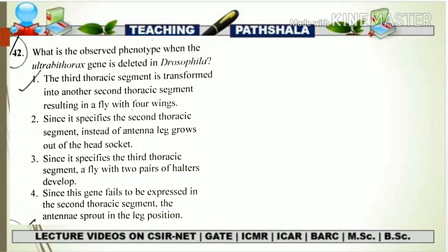We have seen all the different mutation cases — what is going to happen when a particular segment or region has been removed or mutated. In that way, they have asked what will be the phenotype of a Drosophila that has a mutant or deleted ultrabithorax gene. From our previous discussion, you know that there is a head section, thorax region, as well as the abdominal region in our Drosophila embryo.